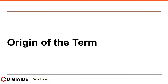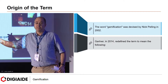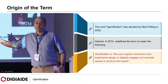Moving on to the origin of the term gamification. The word gamification was devised by Nick Pelling in 2002. Gartner in 2014 defined the term to mean: gamification is the use of game mechanics and experience design to digitally engage and motivate people to achieve their goals.